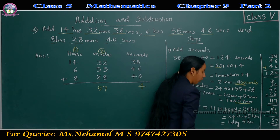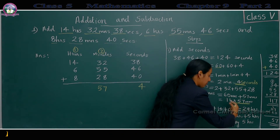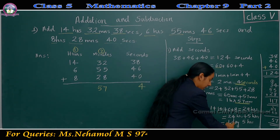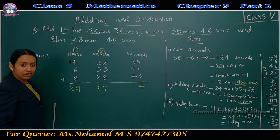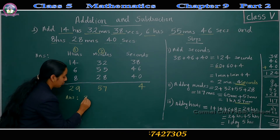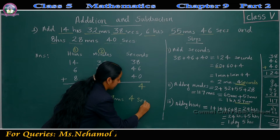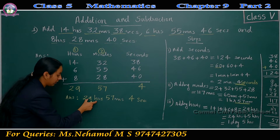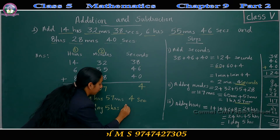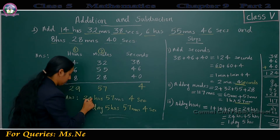We can split 29 as 24 plus 5. 24 hours means 1 day, balance 5 hours. So the answer is 29 hours, 57 minutes, 4 seconds. We can also express this as 1 day, 5 hours, 57 minutes, 4 seconds. Both are the same.